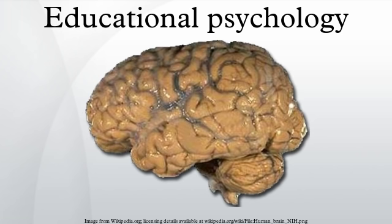Jean Piaget developed the theory of cognitive development. The theory stated that intelligence developed in four different stages: the sensorimotor stage from birth to two years old, the pre-operational stage from two to seven years old, the concrete operational stage from seven to ten years old, and the formal operational stage from eleven years old and up. He also believed that learning was constrained to the child's cognitive development. Piaget influenced educational psychology because he was the first to believe that cognitive development was important and should be paid attention to in education.